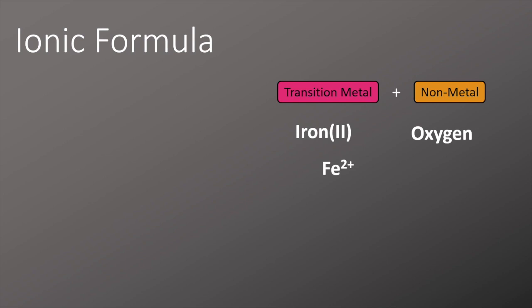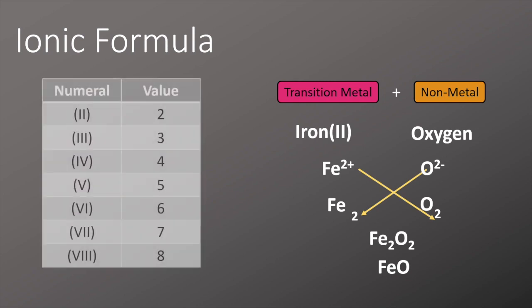We'll do exactly the same method as before and we'll write them out and cross them over to get Fe2 and O2. Now we don't leave it as Fe2O2, we like to simplify it down to FeO. Now if you're a bit struggling with your Roman numerals, the table here to remind you of some of them, have a quick look at that.